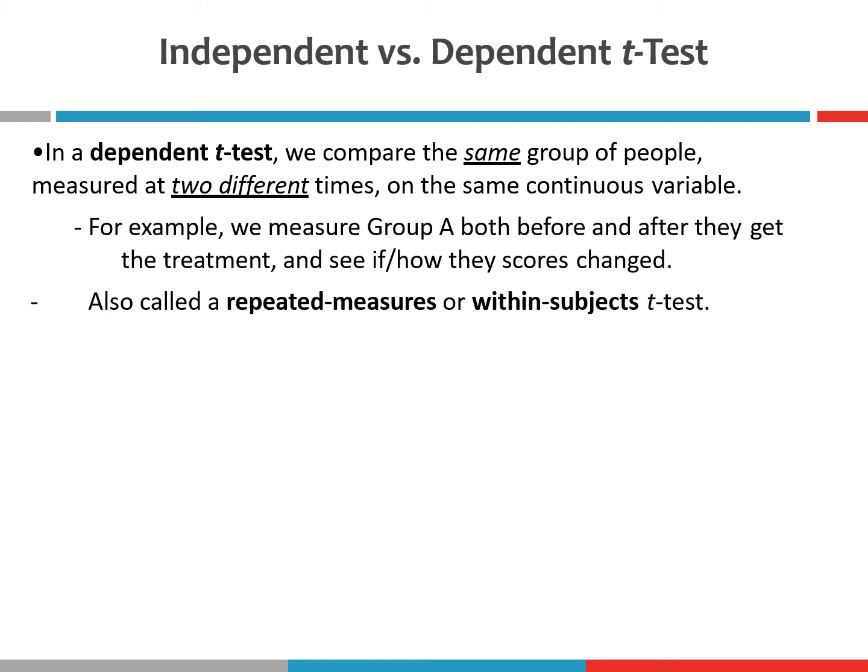With a dependent t-test or a paired t-test, we compare the same group of people measured at two different times on the same continuous variable. So using the same example of a study investigating depression, we measure group A before and after they get treatment to see if or how their scores might have changed. So we only have one group, and we compare their depression inventory scores both before and after they receive some kind of treatment. And in fact, this is more ethical — can you think about why this type of design might be more ethical than the previous one?